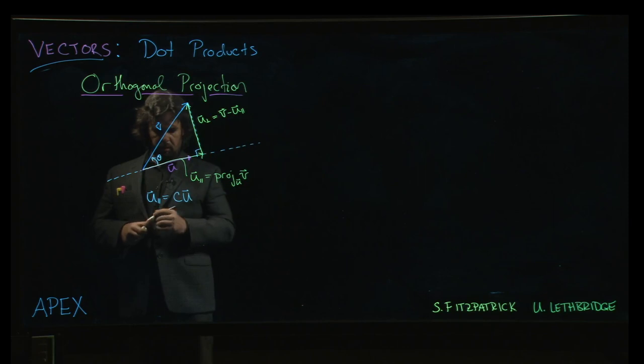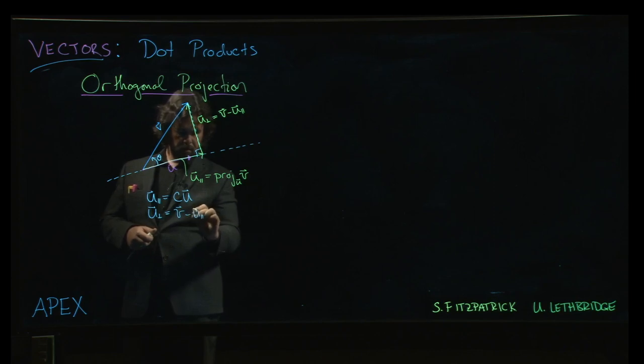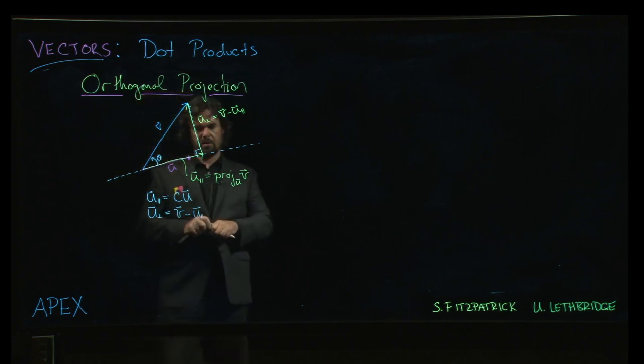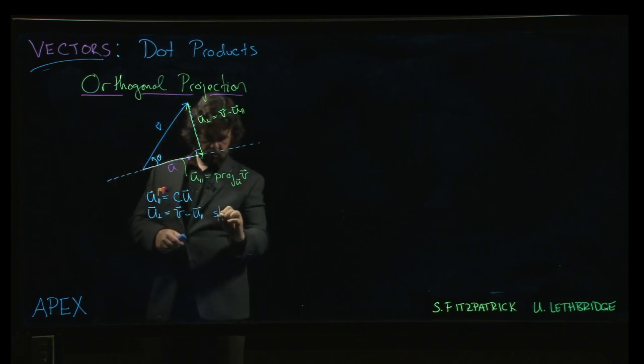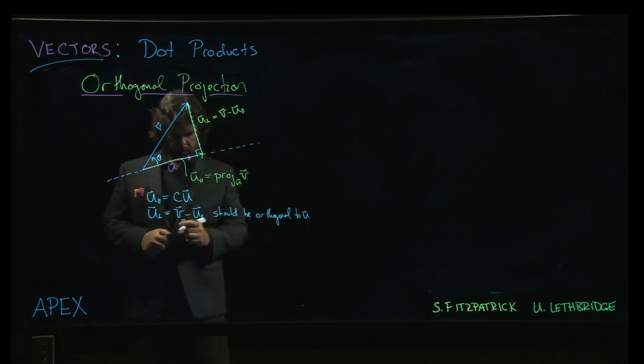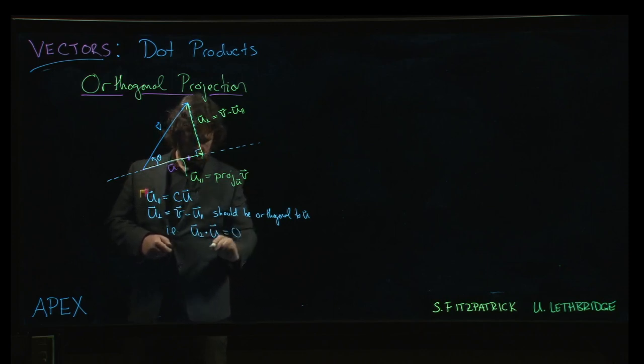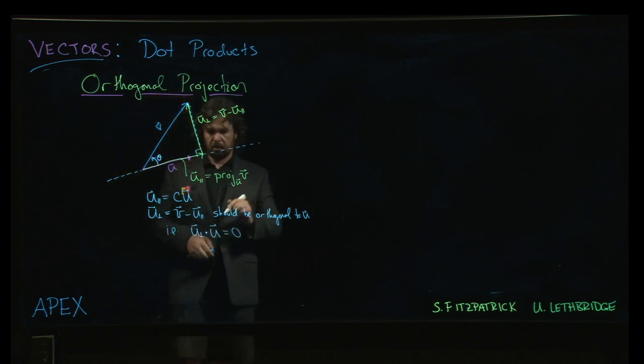We also want this u perpendicular to be equal to v minus u parallel. And we want it to be orthogonal to u. So we want the dot product of the perpendicular part with u. That should be zero. But let's substitute some things in here.